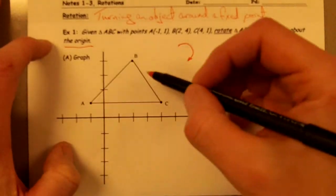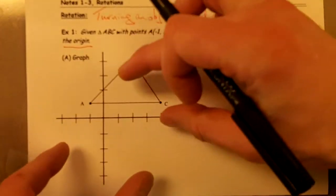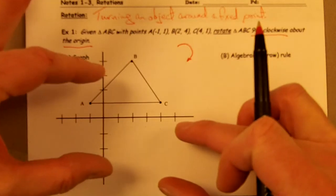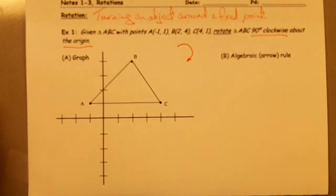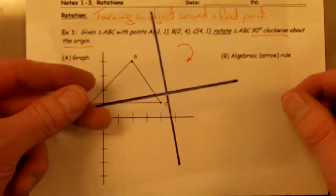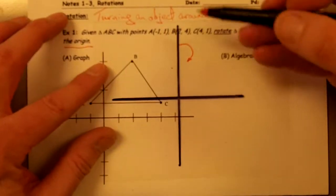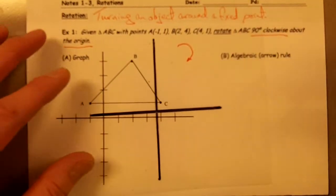So some of you might be able to do this just by looking at it and in your mind, imagine rotating this triangle 90 degrees. But I'm going to use this piece of transparency with a set of XY axes drawn on it.